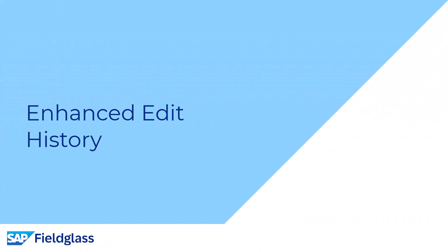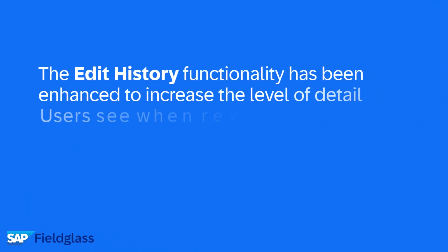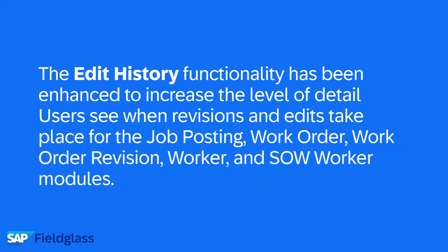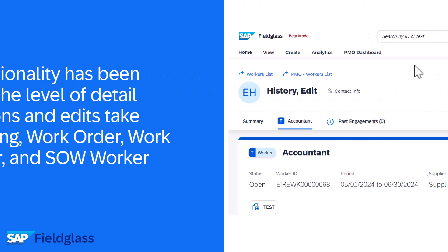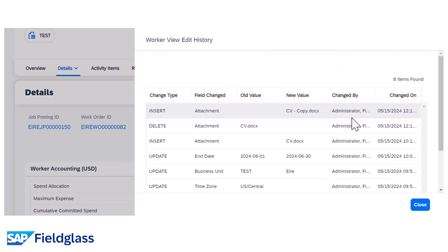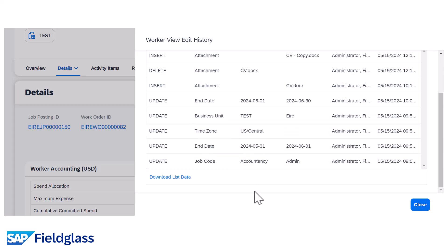Our next feature is enhanced edit history. The edit history functionality has been enhanced to increase the level of detail users see when revisions and edits take place for the job posting, work order, work order revision, worker, and SOW worker modules. A new 'View Edit History' button displays on the details tab of relevant documents. Clicking 'View Edit History' opens a fly-out window displaying a comprehensive view of the edit history details for a document.